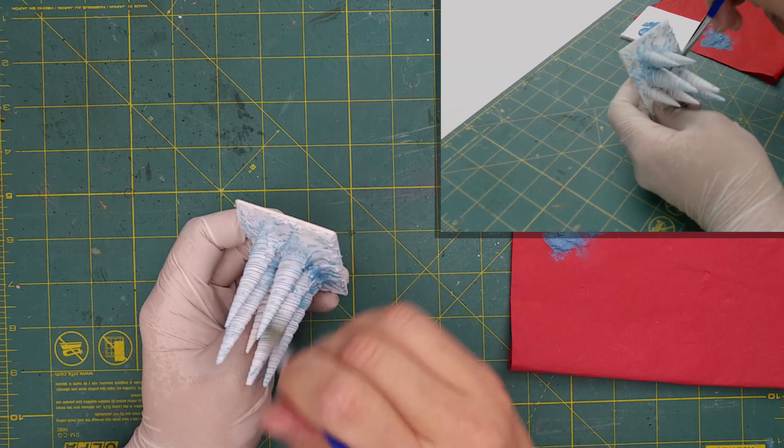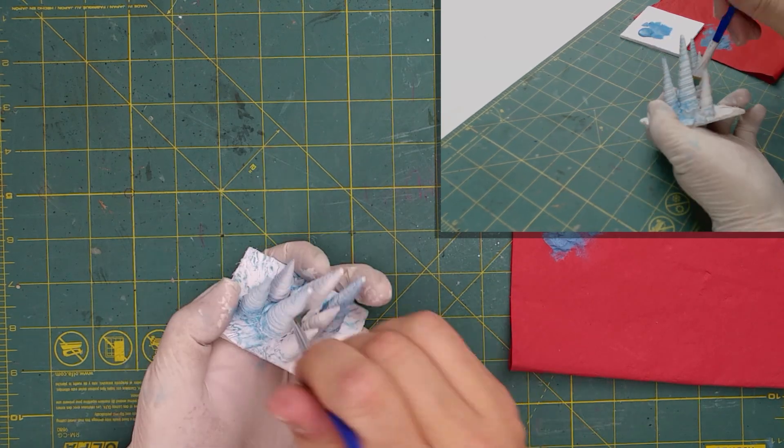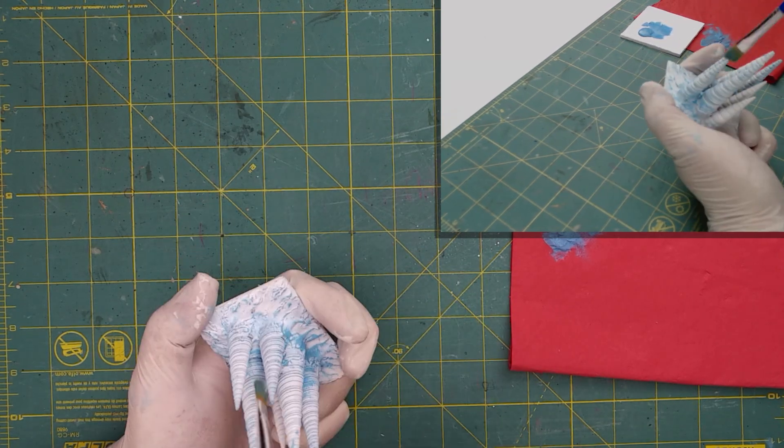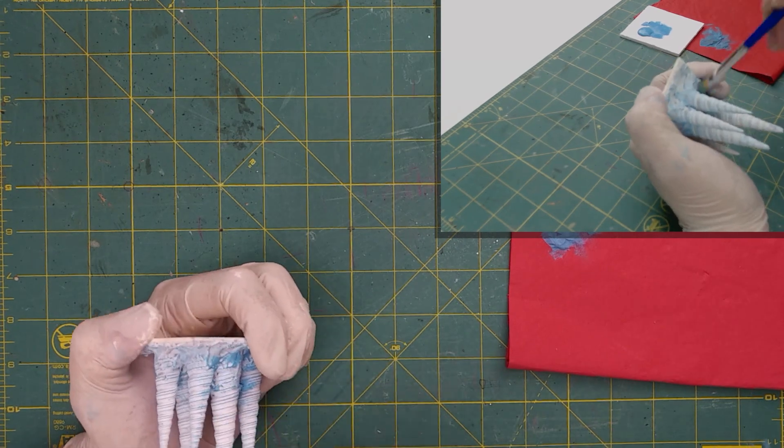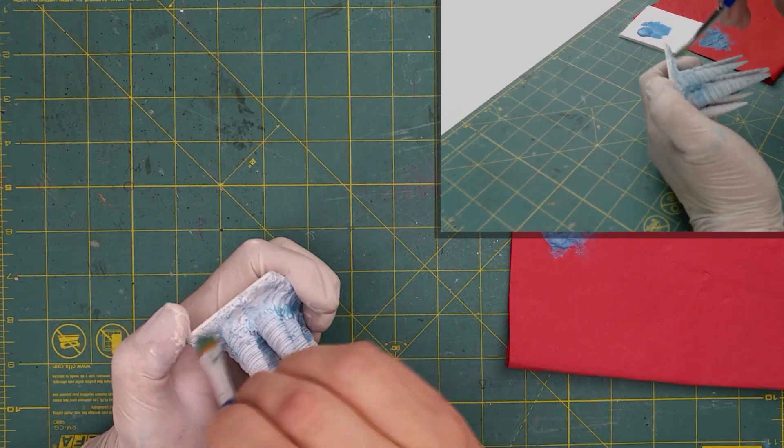In terms of dry brushing, the less paint the better, and it will really capture those surface features and make the texture pop off the surface.